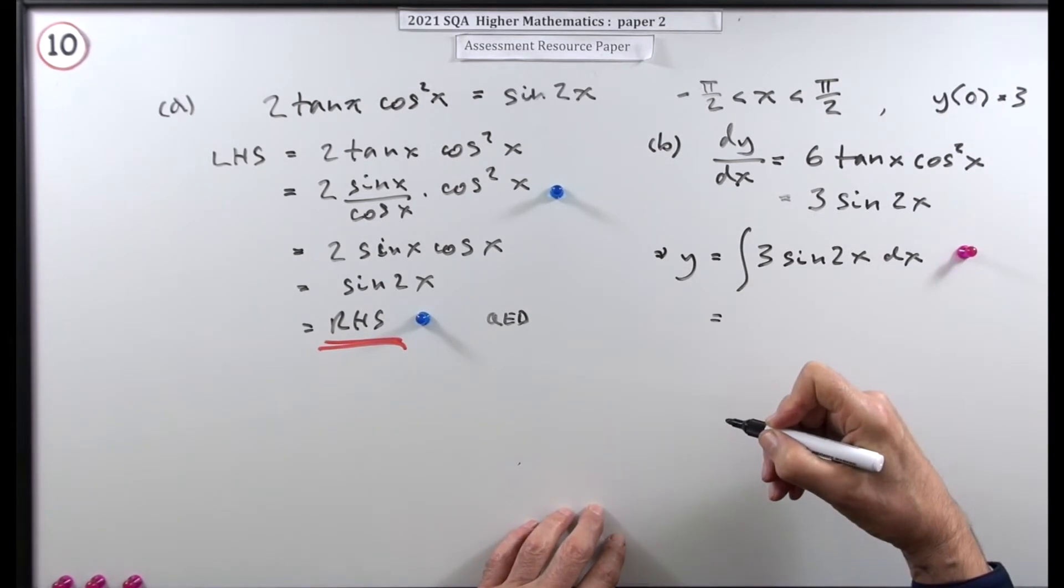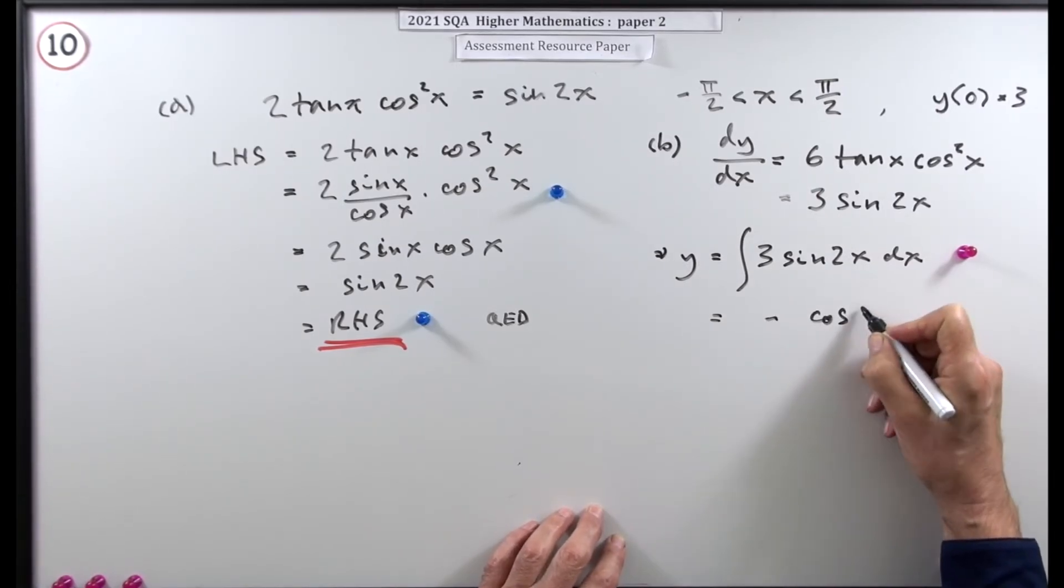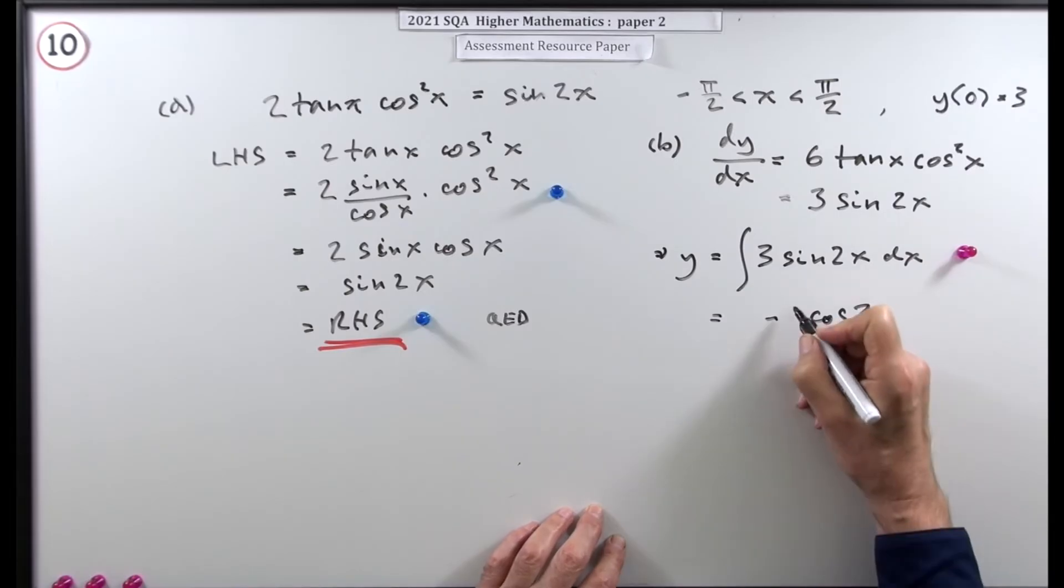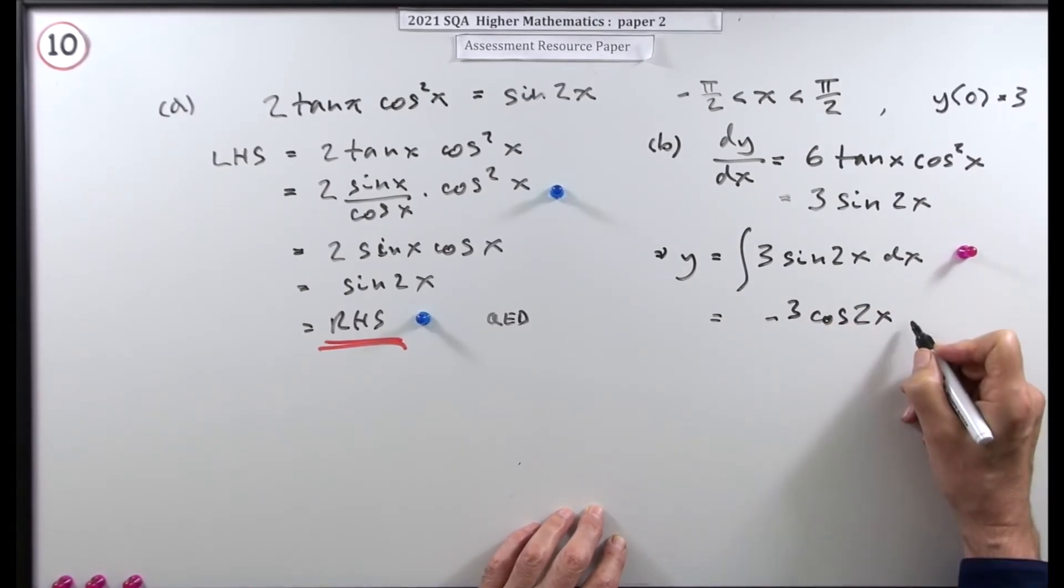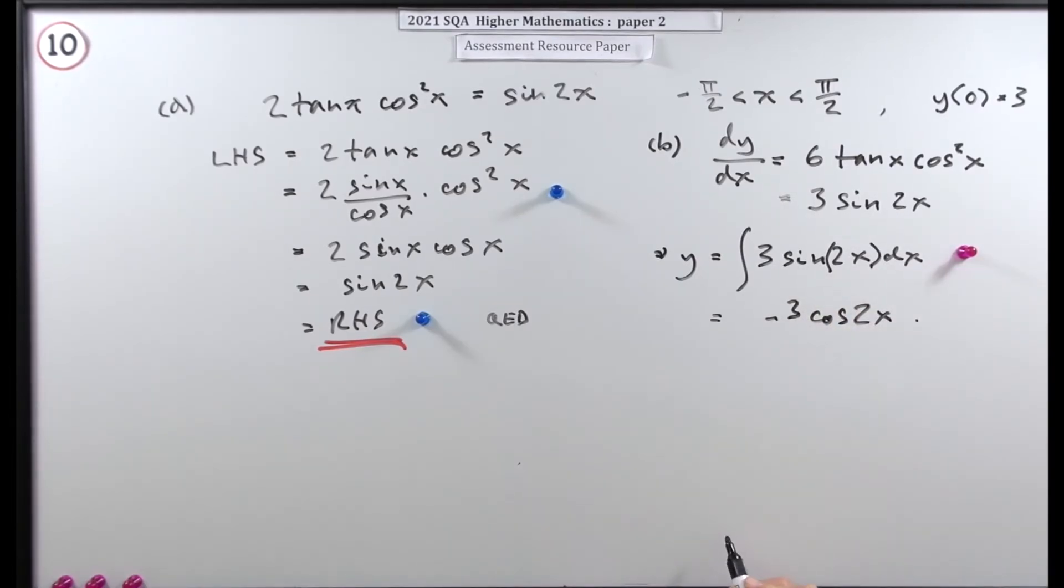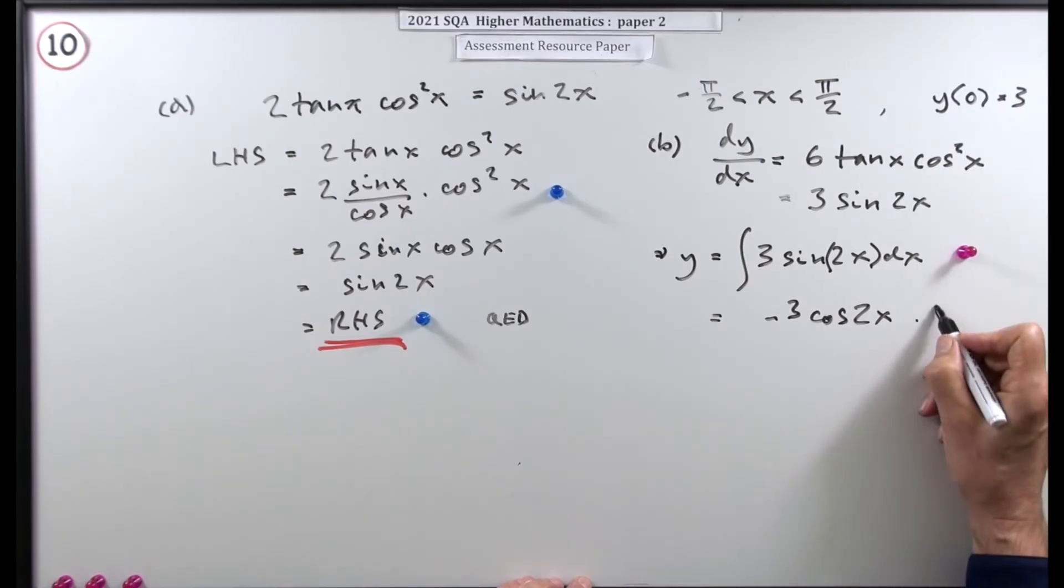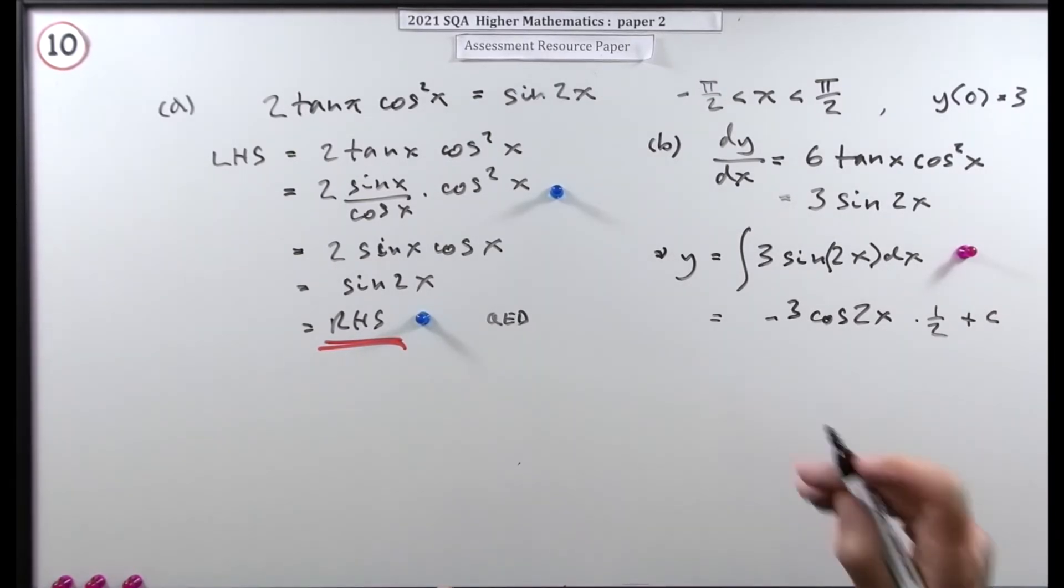Now you just do it. Sine comes from negative cos and it'll still be of 2x and the 3 will still be there. But you'll need to divide the whole part by the inner derivative. You can emphasize that by putting a bracket around that. So that's a function of a function. It's the sine of some function of x. So I'll have to divide by that and not forget to add on a c.